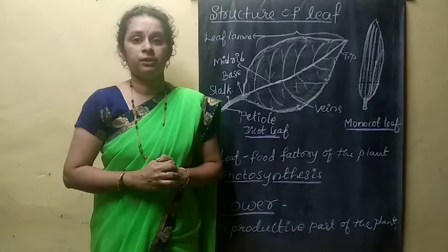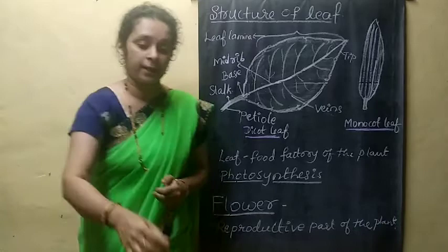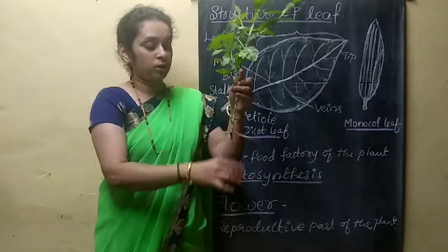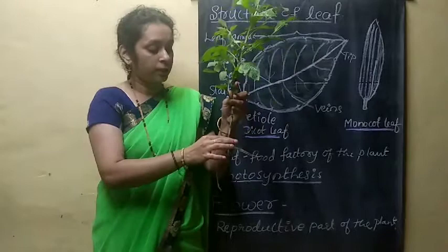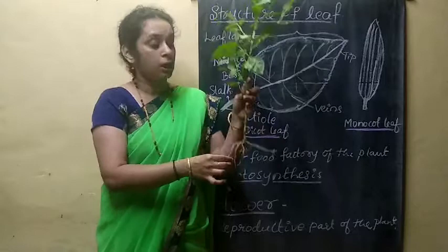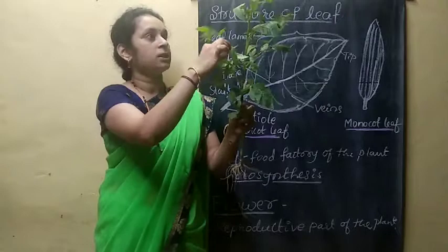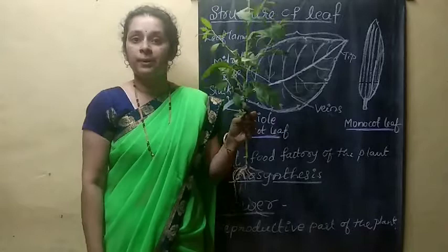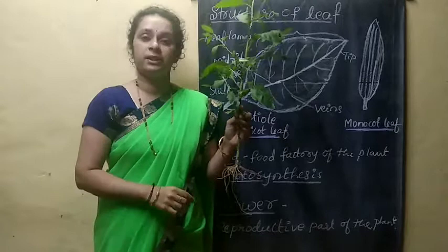First of all I will discuss about the parts of a plant. This is a plant — one type of plant. Here there is a root system and a shoot system. The root is present below the ground. You see, these are the roots, and this is the stem, leaves, branches, small buds, and flowers. Flowers give rise to fruit and fruits give rise to seeds. These are the parts of plants.